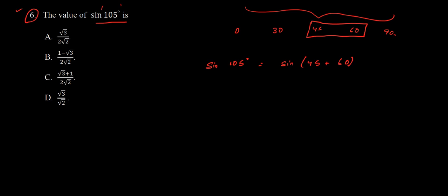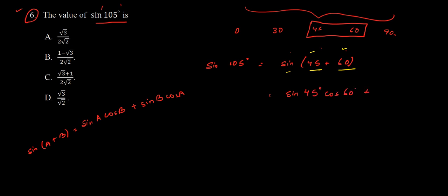We know sin(45°), sin(60°), cos(45°), and cos(60°), so we can apply the sin(A+B) formula. The formula for sin(A+B) is: sin A cos B + sin B cos A. Here, taking A = 45° and B = 60°, this becomes sin(45°)cos(60°) + sin(60°)cos(45°).